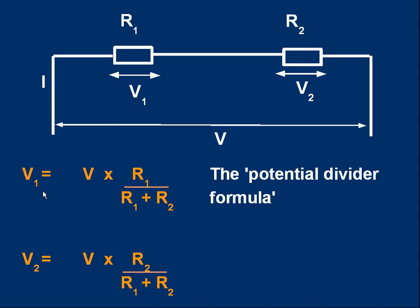Take the original full voltage V and multiply it by the fraction of the voltage that's across the first resistor. That fraction is simply R1 over R1 plus R2. So V times R1 over R1 plus R2 gives us the value of V1.